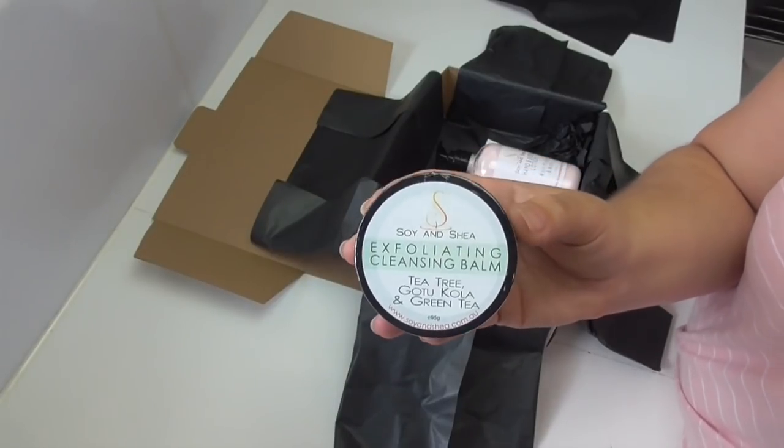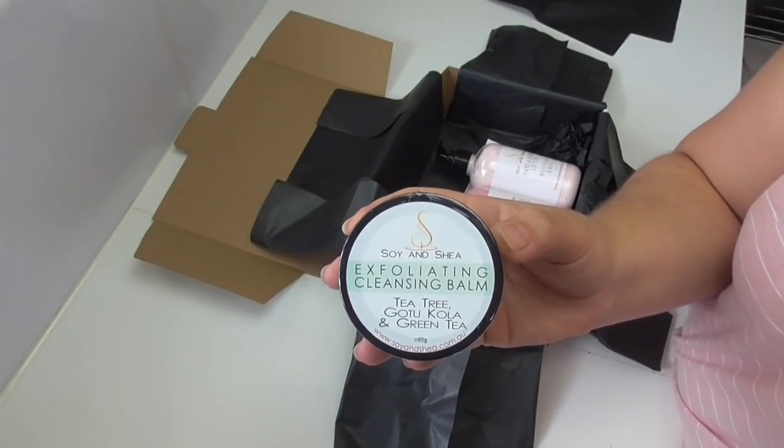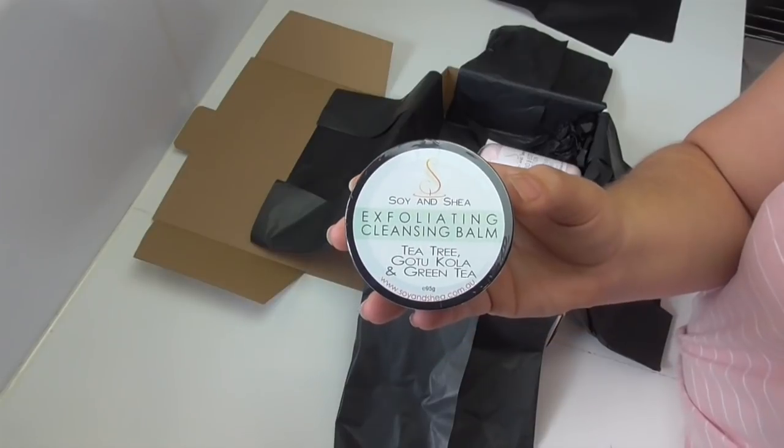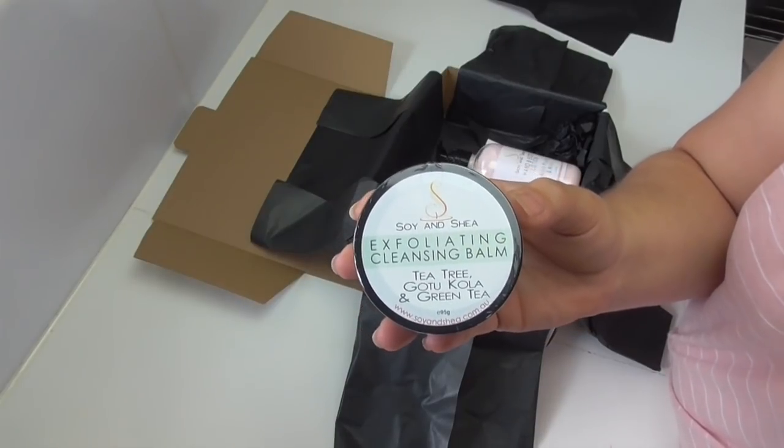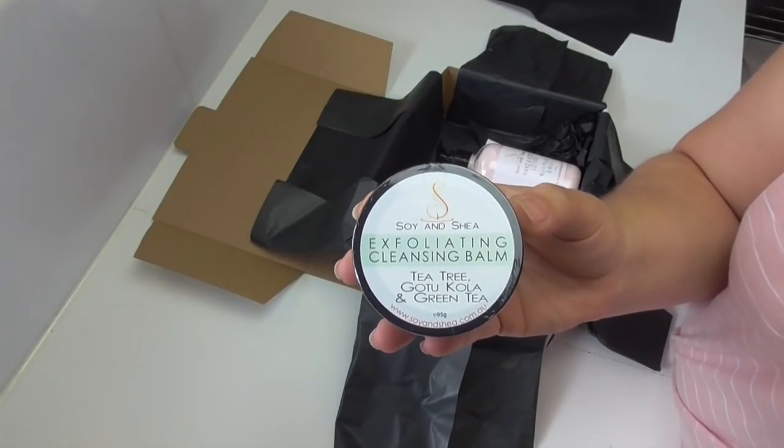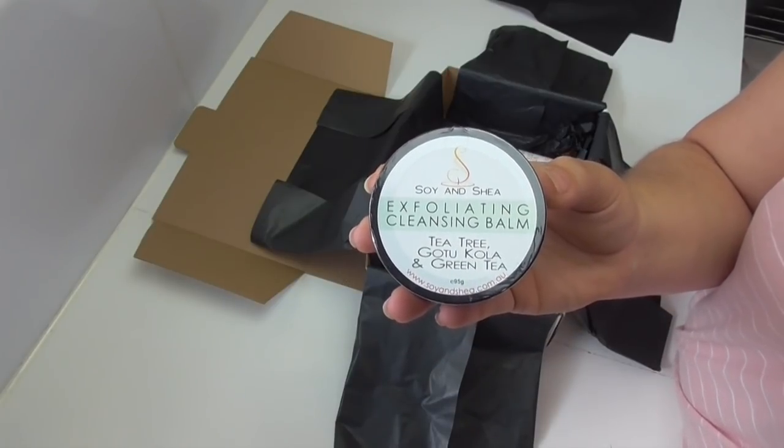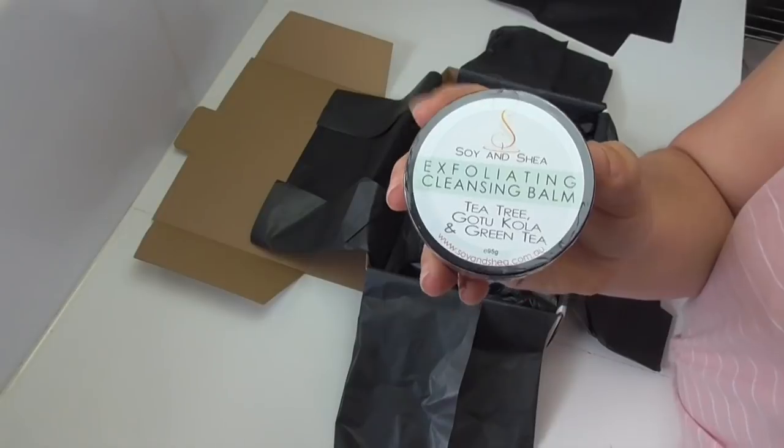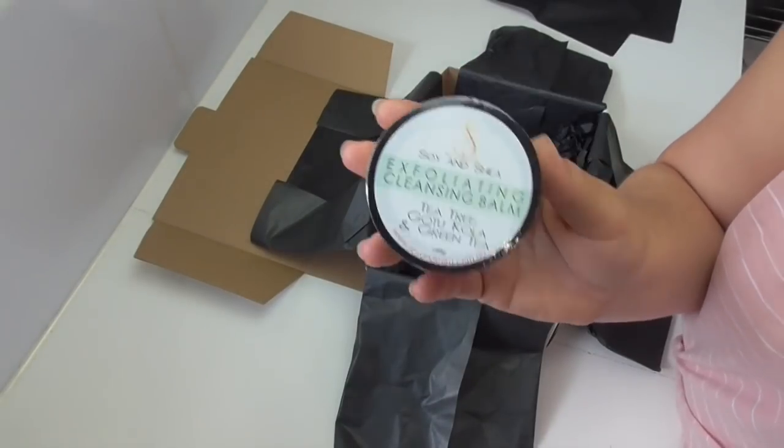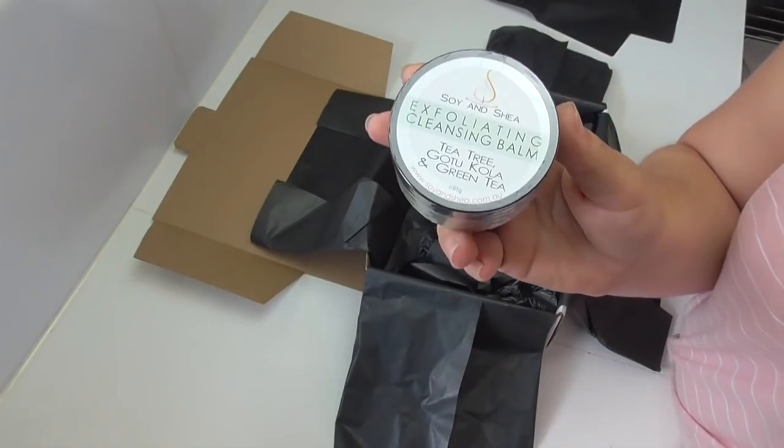So there'll be four different varieties, and this one was tea tree, gotu kola, and green tea. We also included in some of the other boxes a cucumber, aloe vera, and green tea blend, and in 2019 we will be releasing two other blends as well, and they're good for all different sorts of skin types.